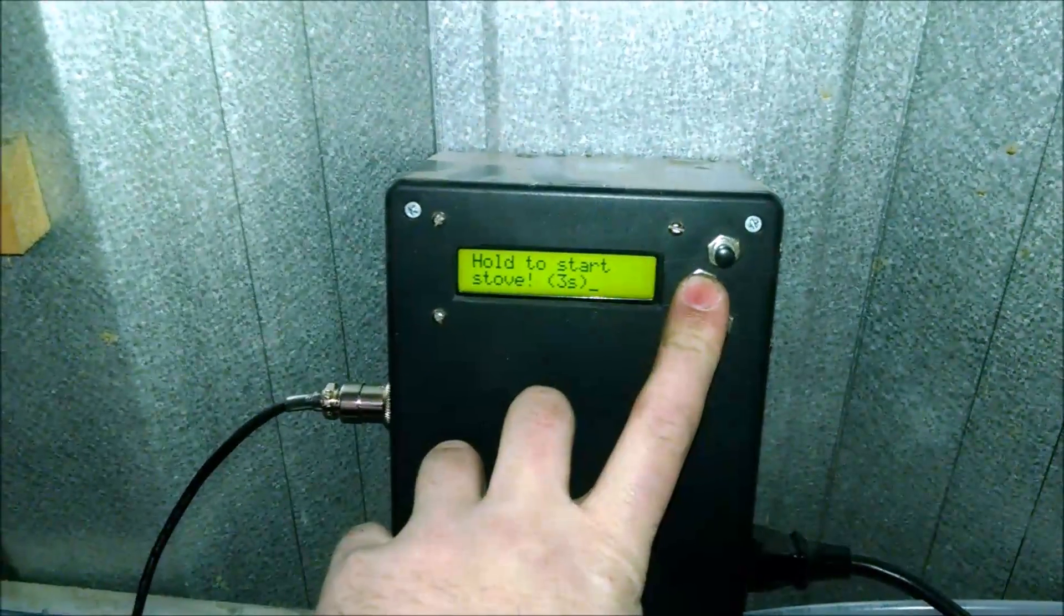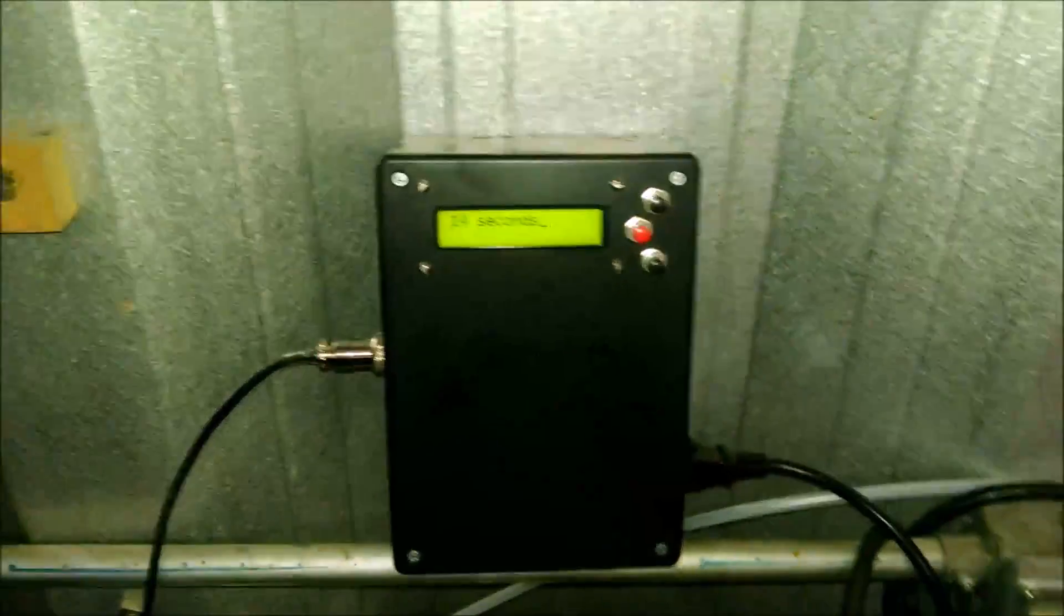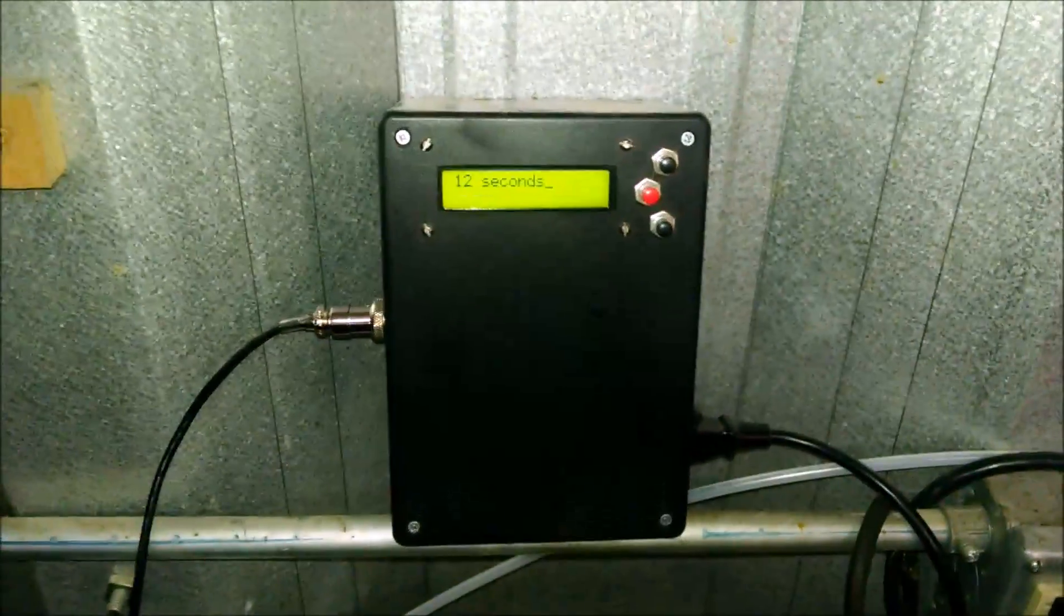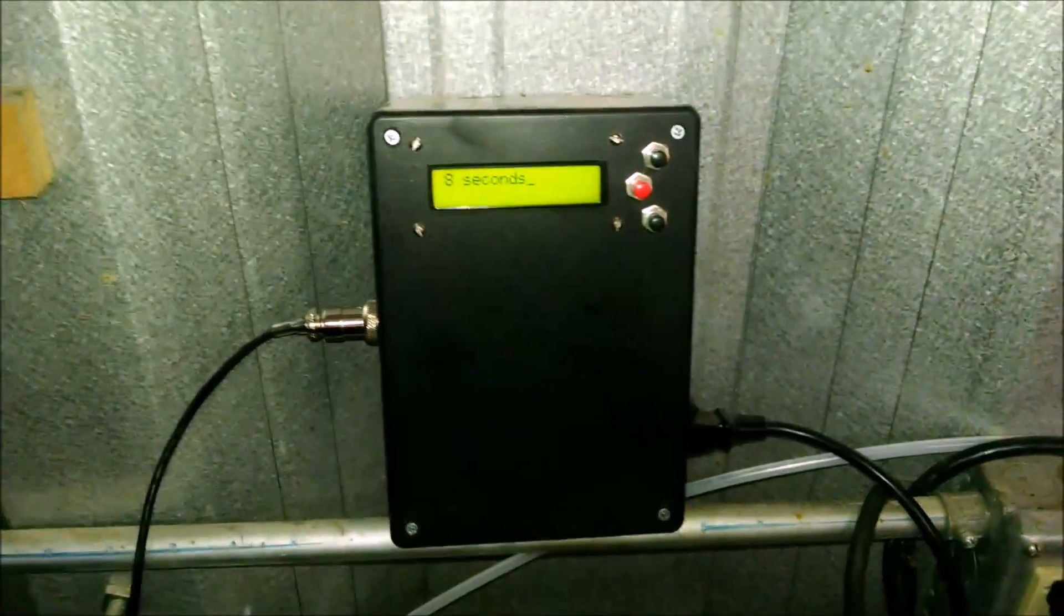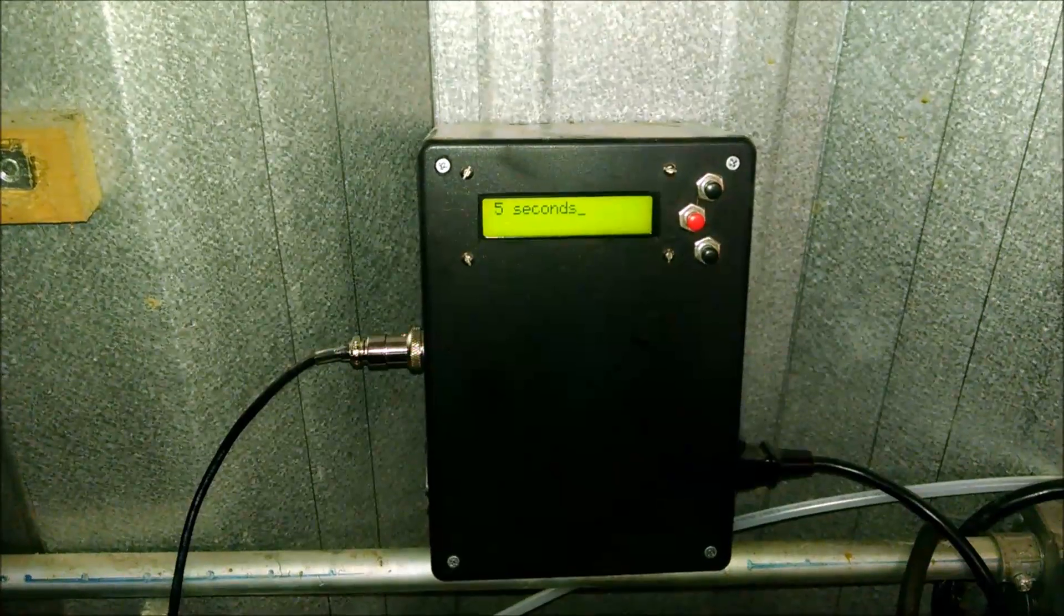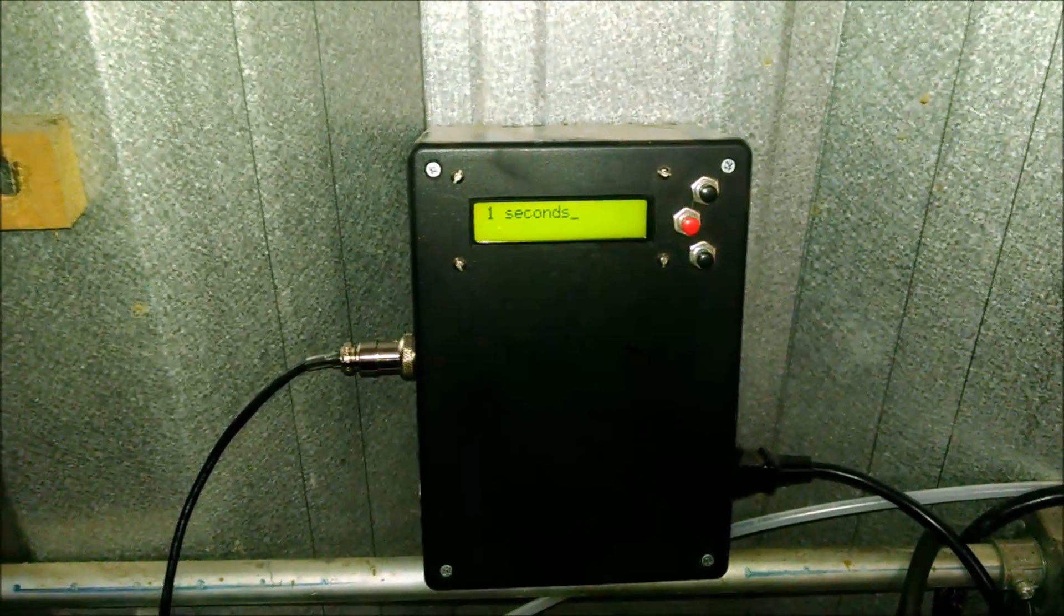So to start it, I'll just hold this down for three seconds. It'll give me a countdown. In my case I'm manually lighting it right now with a propane torch. So I need some time to get back to the stove, get the torch nearby the nozzle. But after the countdown, it'll start to pump at, I think I've got it set at the fourth speed.